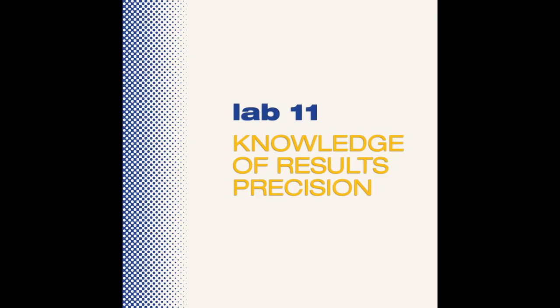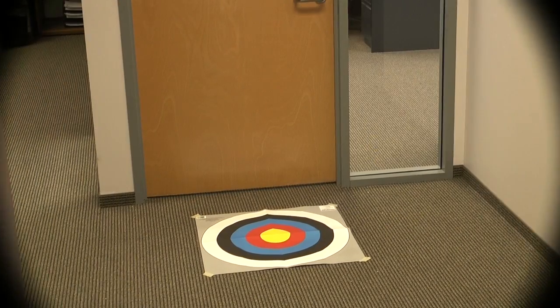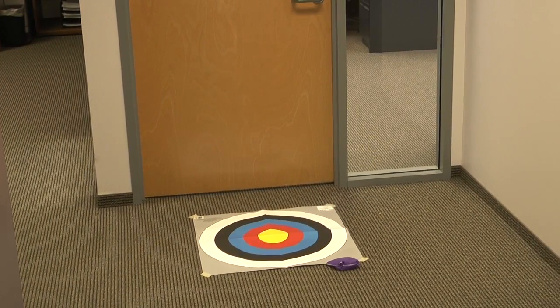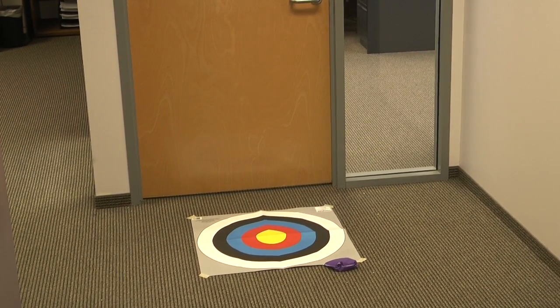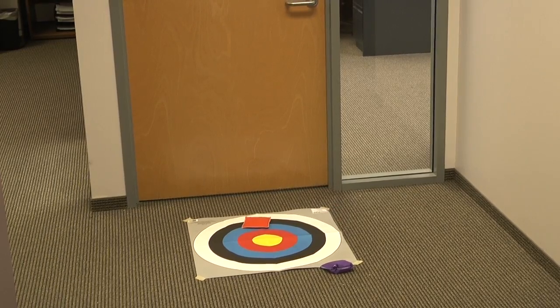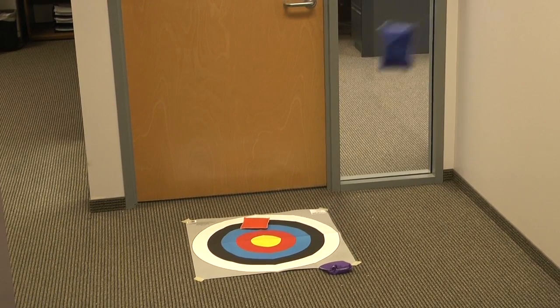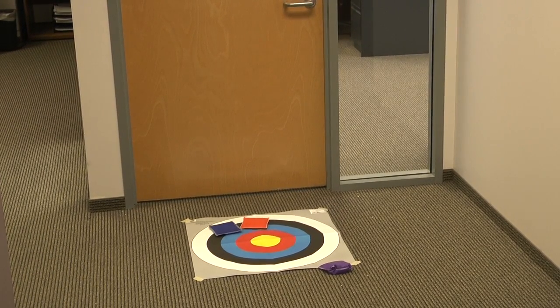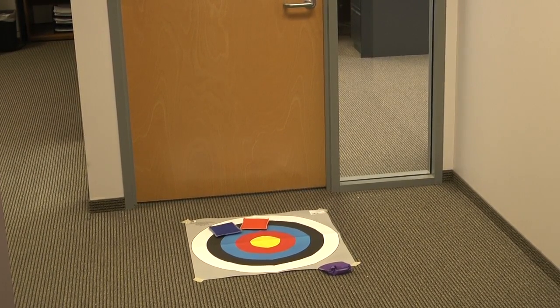In this video, you will see an example from Lab 11, Knowledge of Results Precision. Participants will attempt to throw beanbags at the center of a circular bullseye target while blindfolded.